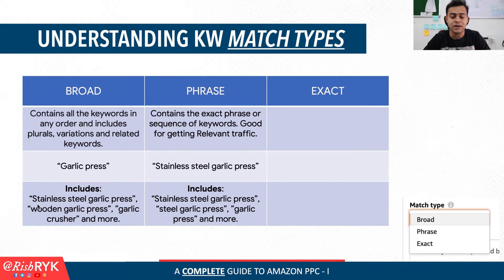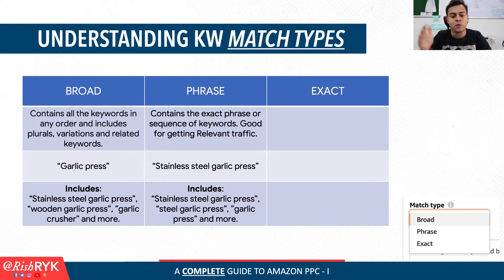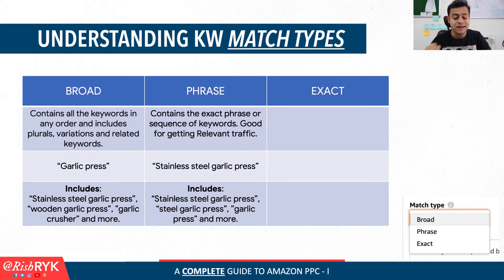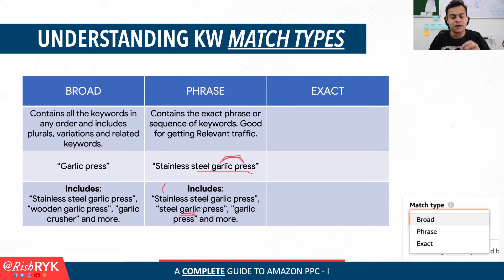Now let's look at what phrase means. Phrase contains the exact phrase or sequence of keywords, and this is very good for getting relevant traffic to your listing. For example, if your keyword was 'stainless steel garlic press' and your match type was set to phrase, then your product would show up for all of these keywords: 'stainless steel garlic press,' 'garlic press,' 'stainless steel garlic press garlic press,' 'steel garlic press.' So basically, the first one is exactly what the keyword was. The second example is 'steel garlic press,' which is part of the phrase, and the third example is 'garlic press.' All of these different kinds of keywords are actually going to show your ad to the customer.